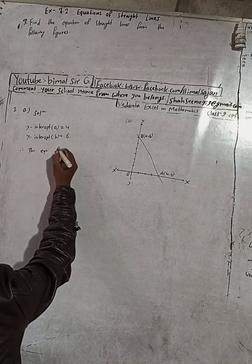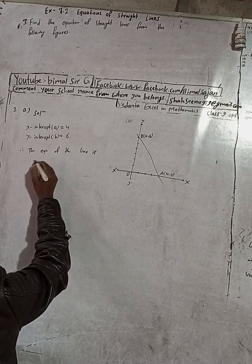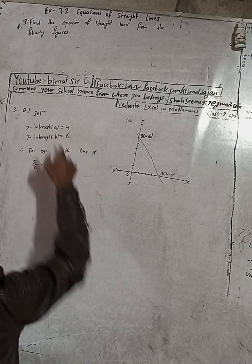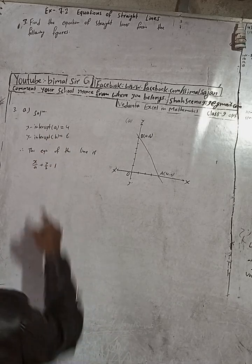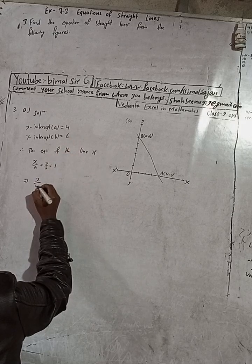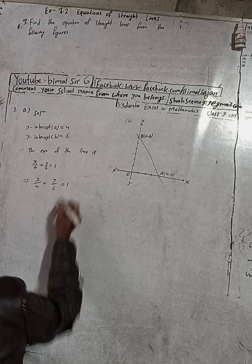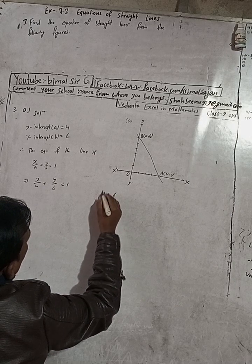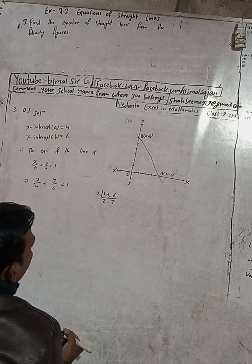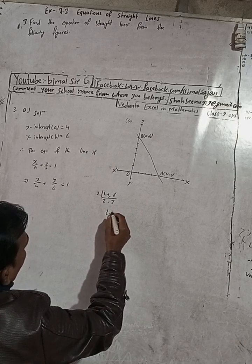Therefore the required equation of the line is the double intercept form: x/a + y/b = 1. Since a and b are given, we write x/4 + y/6 = 1. Now 4 and 6 — LCM is 12, since 4 = 2×2 and 6 = 2×3, both sharing a factor of 2.